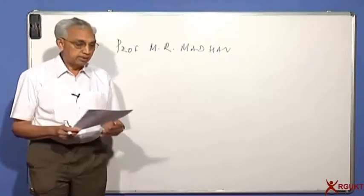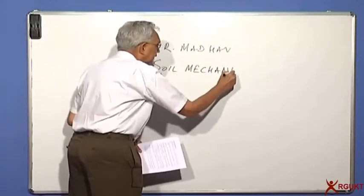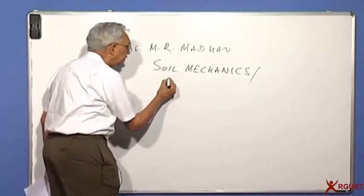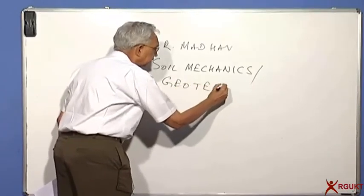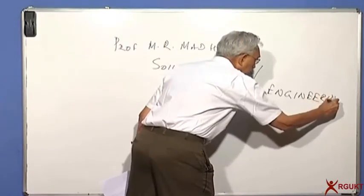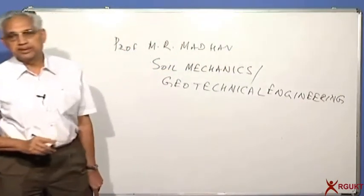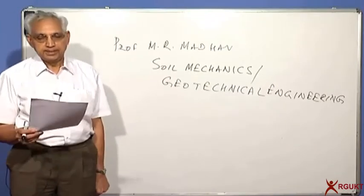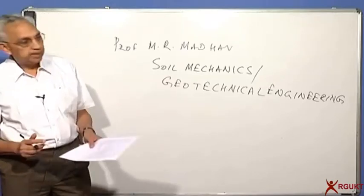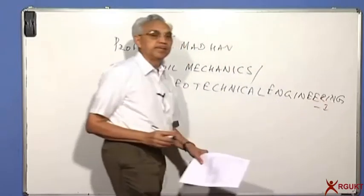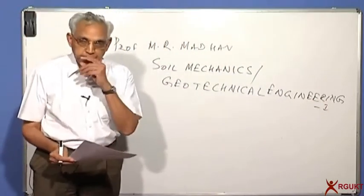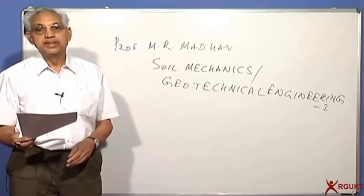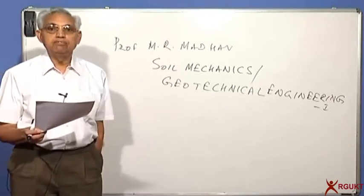The course is called Soil Mechanics according to your syllabus, but the modern terminology is slightly different — we call it Geotechnical Engineering. The reason we change the name is that 'Geo' means Earth, and engineering of Earth is called Geotechnical Engineering. In many places, this is called Geotechnical Engineering I, and the second course, Geotechnical Engineering II, covers application of these principles to practical problems, especially foundation design.